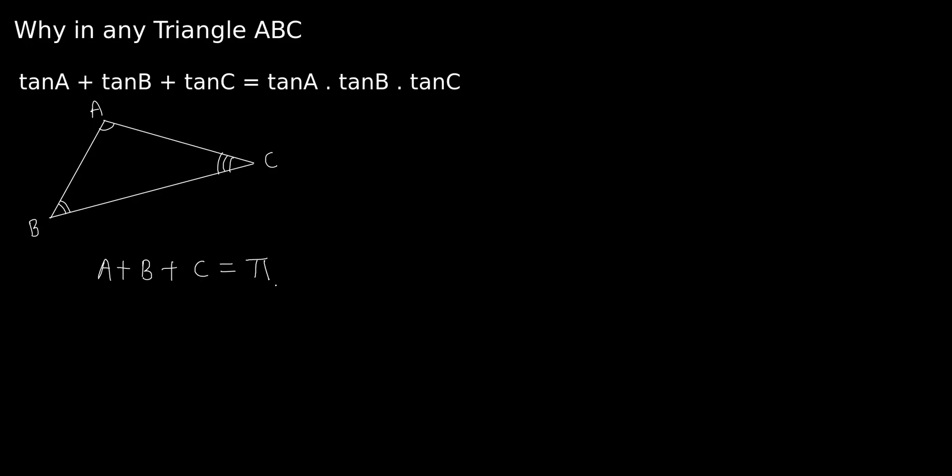From here we can write A + B = π - C. Now A + B and π - C are both angles and they are equal, so we can take tan of these two angles. Because these angles are equal, their tan should also be equal, so applying tan on both sides: